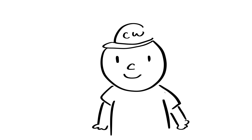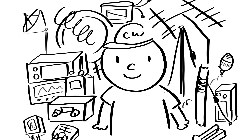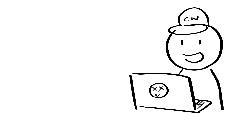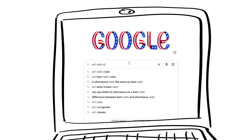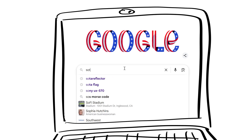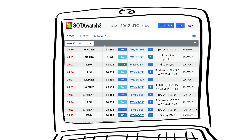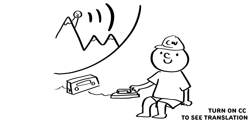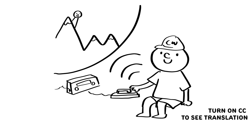And then you can find your next hyperfixation on radio equipment and buy a lot of radio gear. Or if you don't want to do that, you can look up your local ham radio club and ask someone to show you their radio equipment at home. Wow, that's a lot of radio. Let's not worry about it and try to find someone to contact. Let's go on this website to see if somebody is on a mountain. This person is on a mountain — let's try to congratulate them. Let's go!